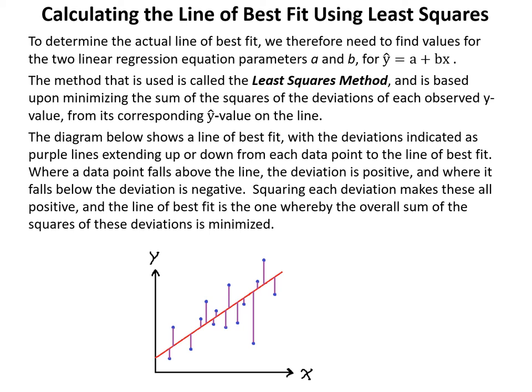Where a data point falls above the line the deviation is positive, and where it falls below the line the deviation is negative. If we added up the deviations, positives and negatives would cancel out. But squaring each deviation makes them all positive, and the line of best fit is the one where the overall sum of squares of these deviations is minimized.